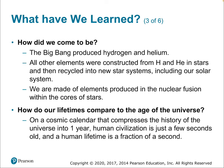The Big Bang produced only hydrogen and helium — no other elements. All heavier elements were constructed from hydrogen and helium in the cores of stars and then recycled into new star systems. Our solar system contains heavy elements from previous generations of stars that blew up. We are made of elements produced by nuclear fusion within the cores of stars. Human civilization, on the cosmic calendar, is just a few seconds old; a human lifetime is about a ten-thousandth of a single second.